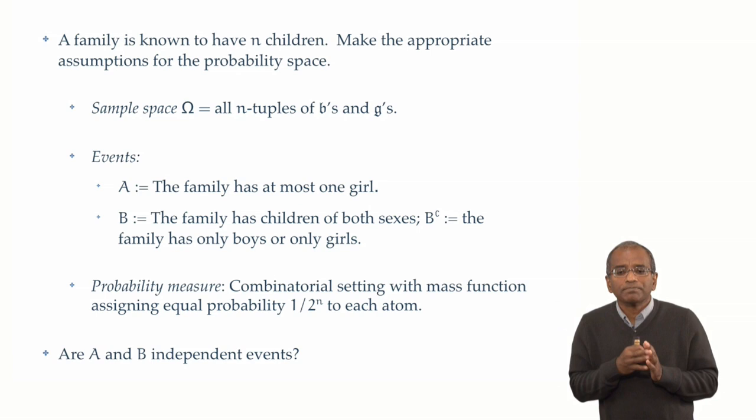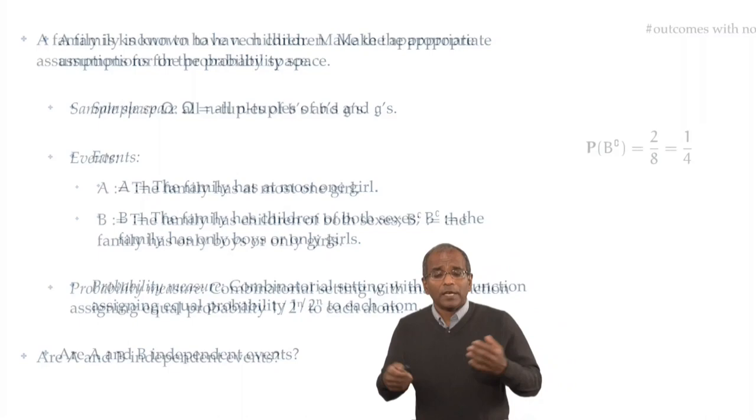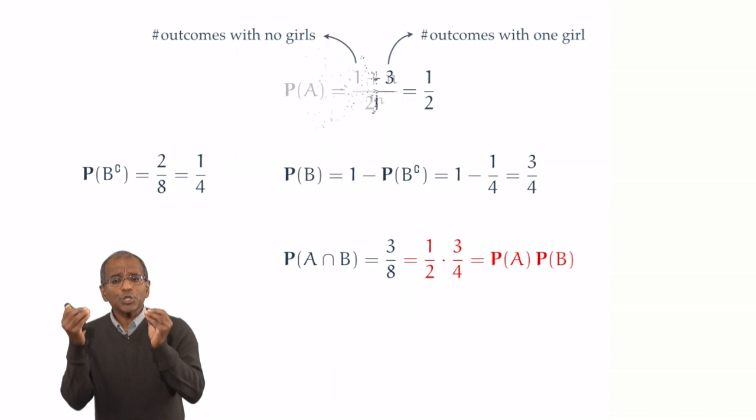The events A and B are as advertised. But the combinatorial measure now we have is an equal mass to each sample point, to each atom. And therefore, the probability of each atom is 1 in 2 to the power n. The question again is, are A and B independent? And let's run through the calculations again. First, what can I say about the probability of A? Again,